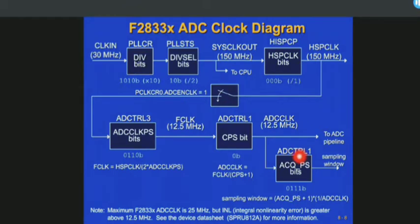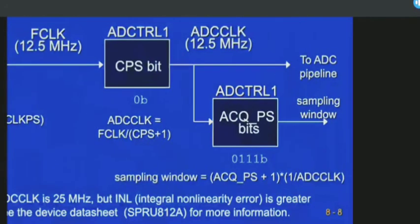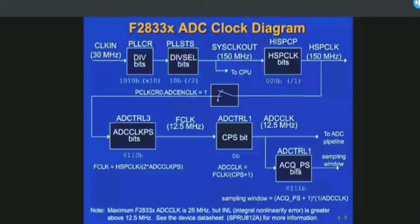The group bits in the ADC control register define the length of the window used between the multiplexer switch and the time when we sample the input voltage. The sampling window is defined by a formula based on the ADC control registers and ADC clock, determining at what time we want to do the sampling of input signals. These are some limitations of the ADC - to provide a clock and to take samples from analog inputs.